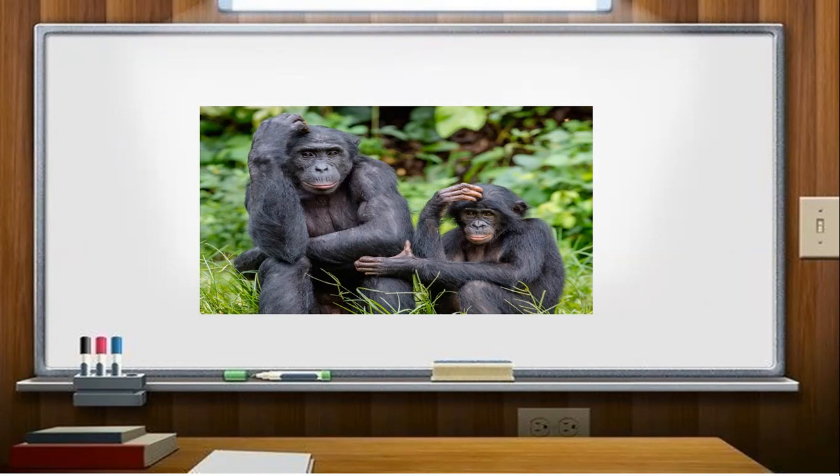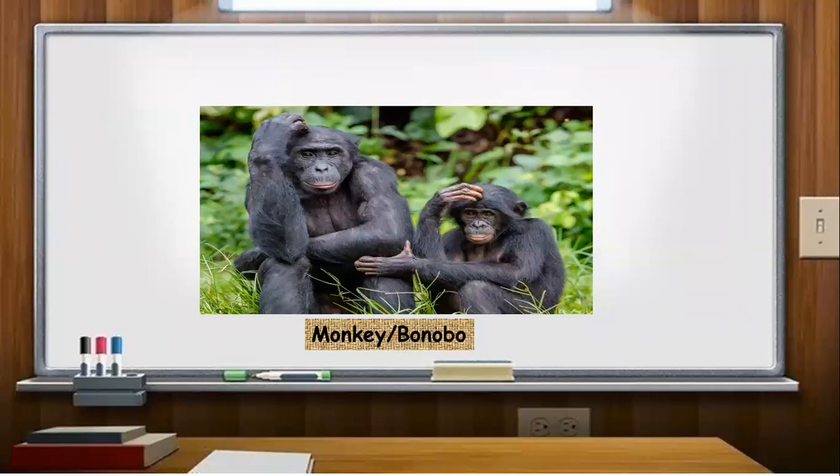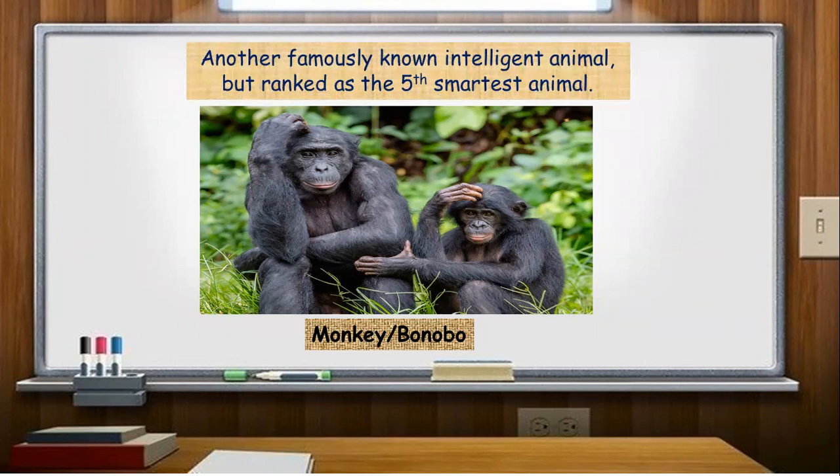And the last one, what is this? Very good, that is a monkey, but specifically the family of Bonobo. This family of monkey Bonobo is the fifth smartest animal according to Wikimedia. They are famously known as an intelligent animal but ranked as the fifth smartest animal. They may look like they have some actions similar to humans, but they are ranked as the fifth smartest animal.